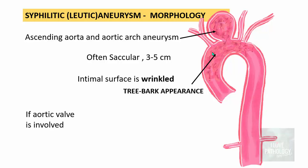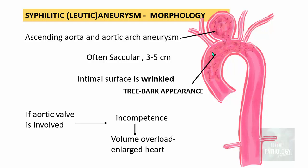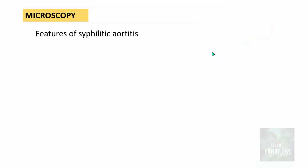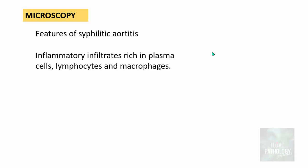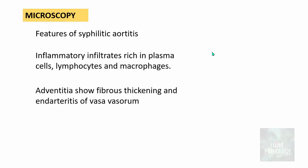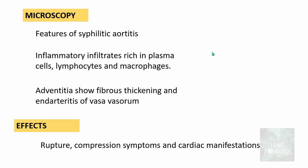If the aortic valve is involved, that results in incompetence of the valve. Because of incompetence, there will be volume overload leading to enlargement of the heart, referred to as cor bovinum. Microscopically, inflammatory infiltrates rich in plasma cells, lymphocytes, and macrophages are seen. The adventitia shows fibrous thickening and endarteritis of the vasa vasorum. The effects of syphilitic aneurysm include rupture, symptoms due to compression, and cardiac manifestations.